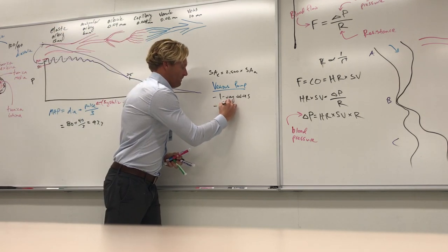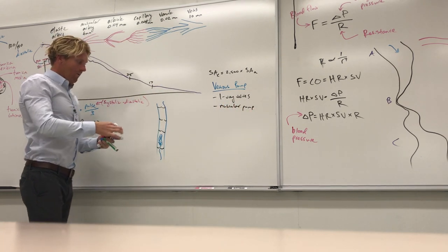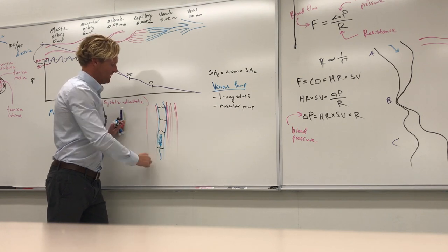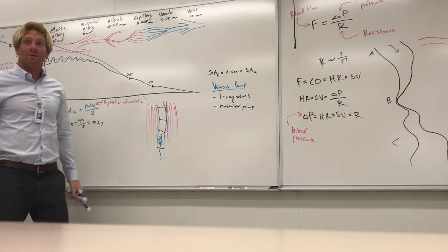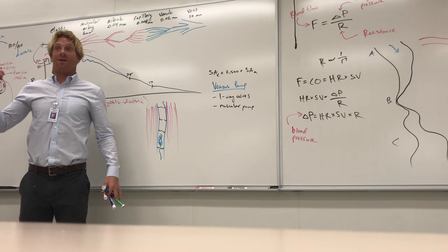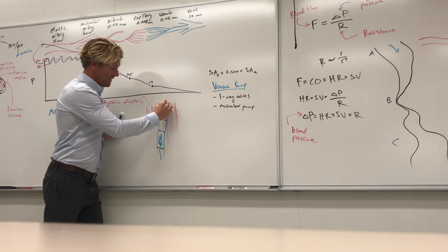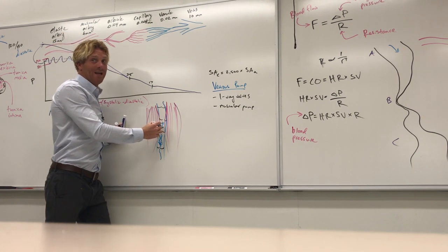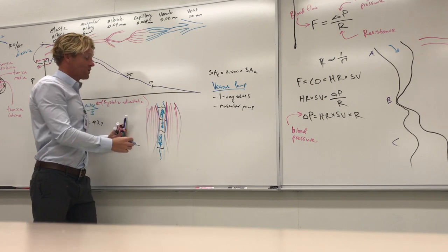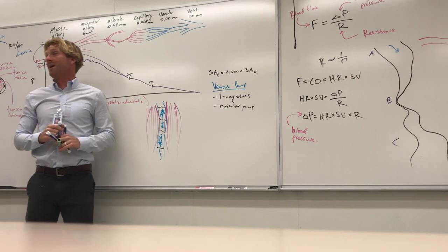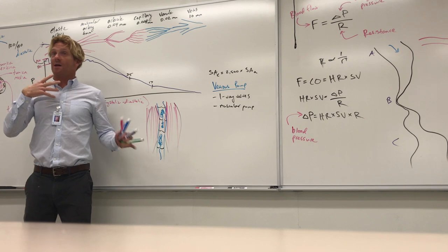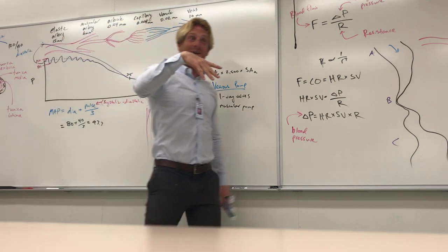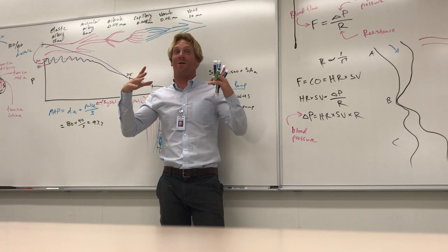The second mechanism is the muscular pump. Our largest veins are situated between large muscles of the limbs. When a muscle contracts, it gets shorter and wider — squeezing the vein between muscles. Blood can't go down because of the one-way valves, so it gets pushed upward. Every muscle contraction pumps blood up a segment of the vein, accelerating venous return during exercise.